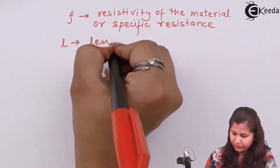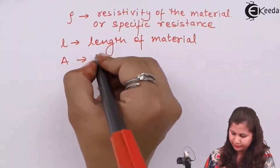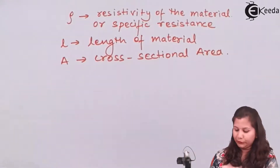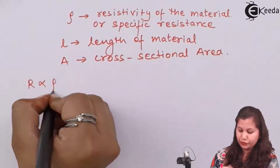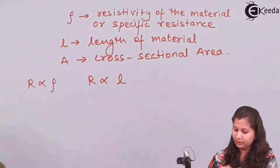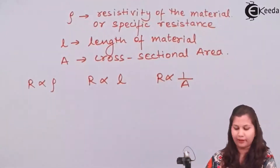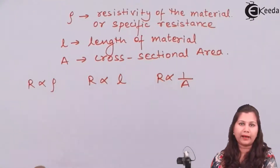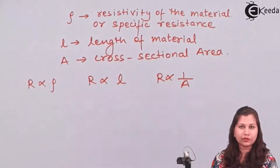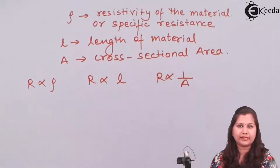L is the length of the material and A is the area. From that formula, R is directly proportional to resistivity, R is also directly proportional to the length of the conductor, and R is inversely proportional to the cross-sectional area. So as the specific resistance or length increases, resistance increases; and if cross-sectional area increases, the resistance decreases.